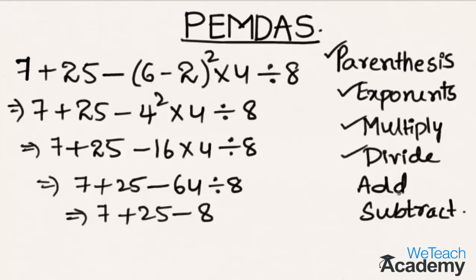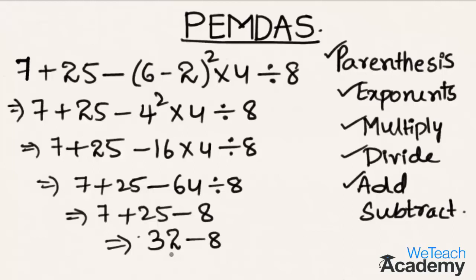Then coming to addition: 7 plus 25 is 32, minus 8. Addition is finished. Then at last, subtraction gives us 32 minus 8, which is equal to 24 as the result.